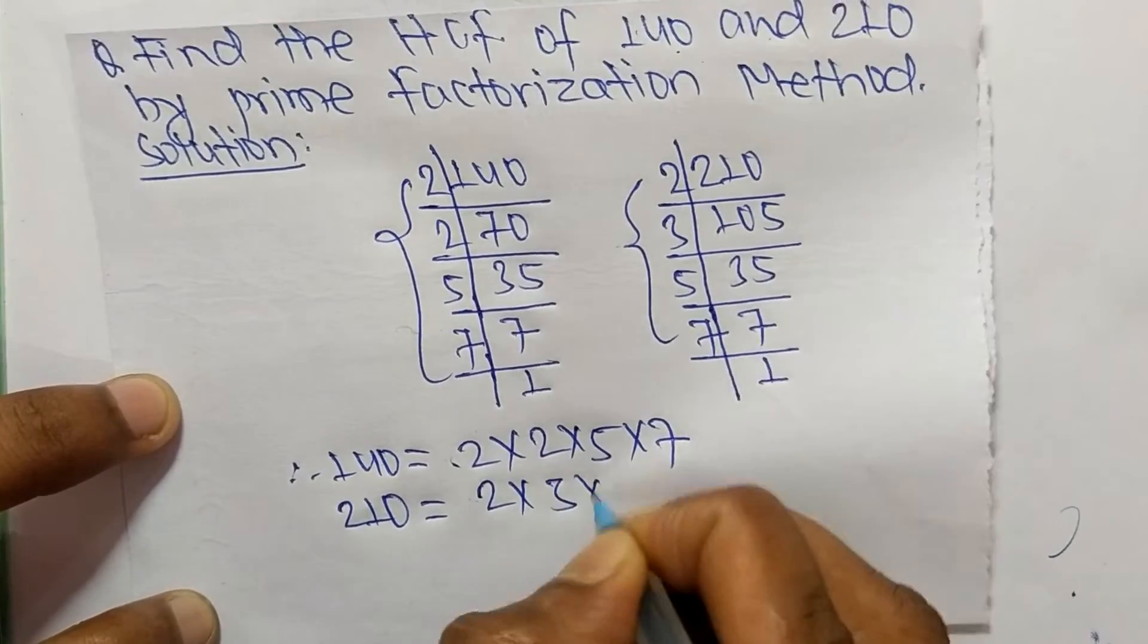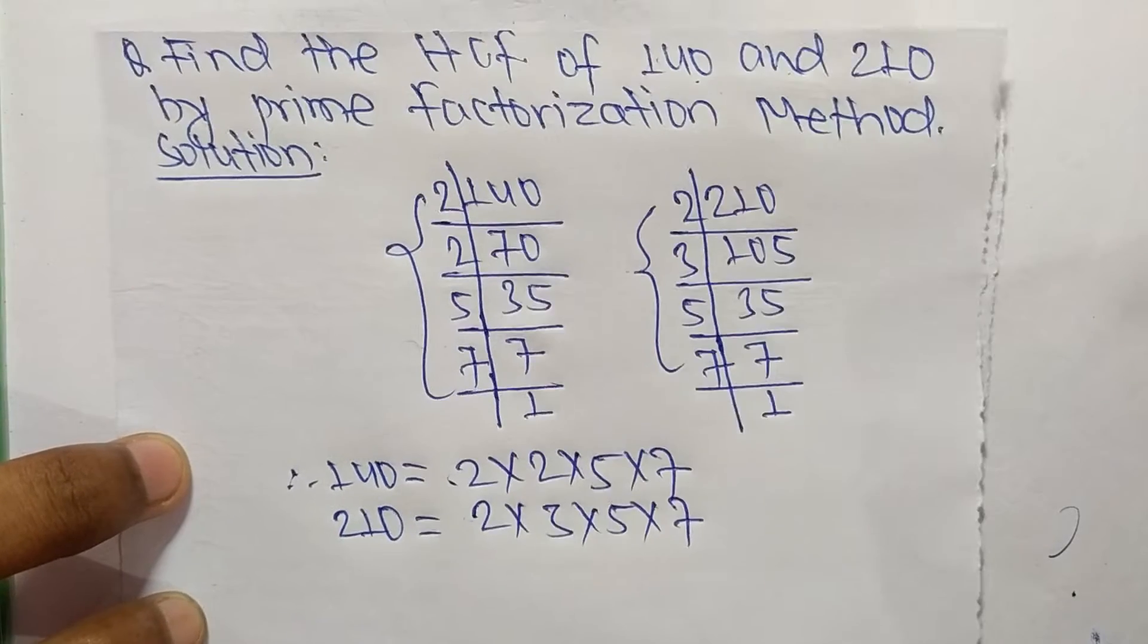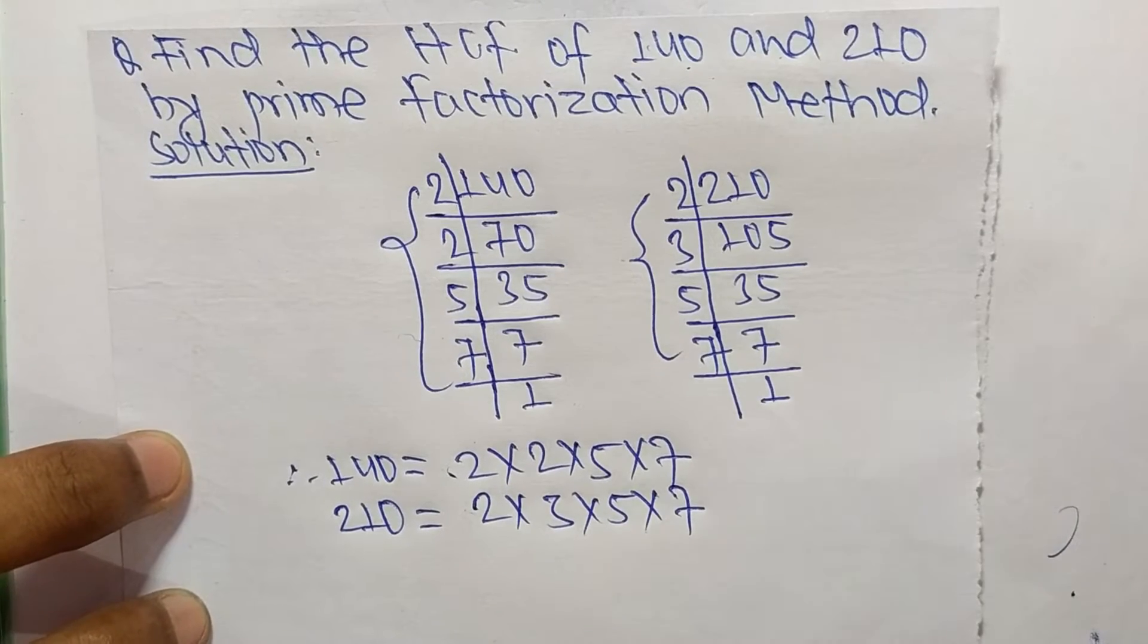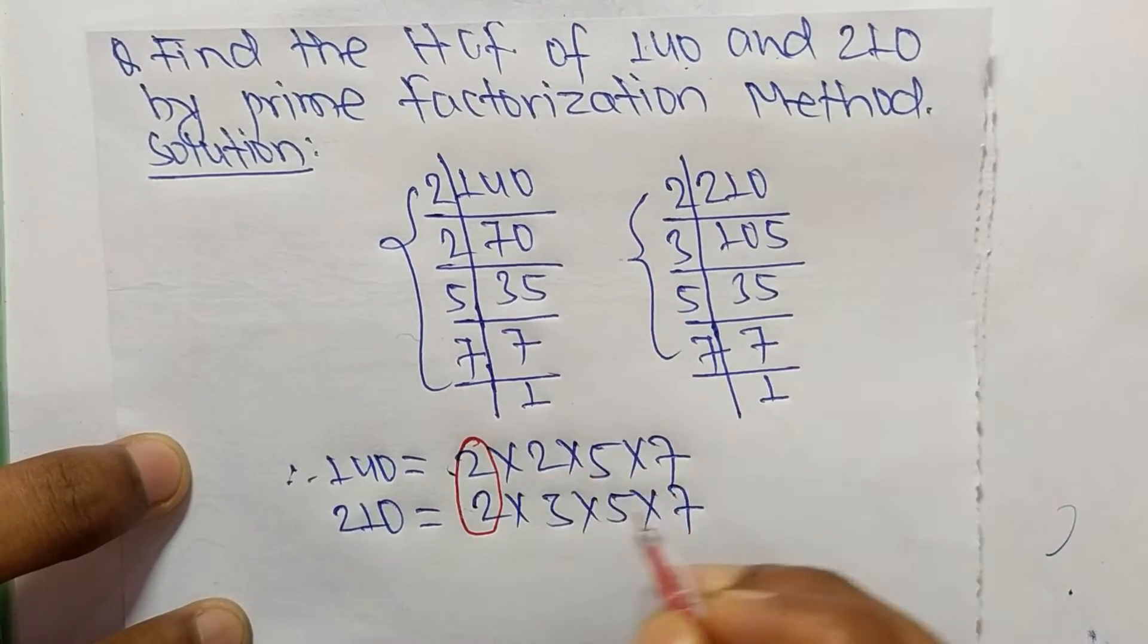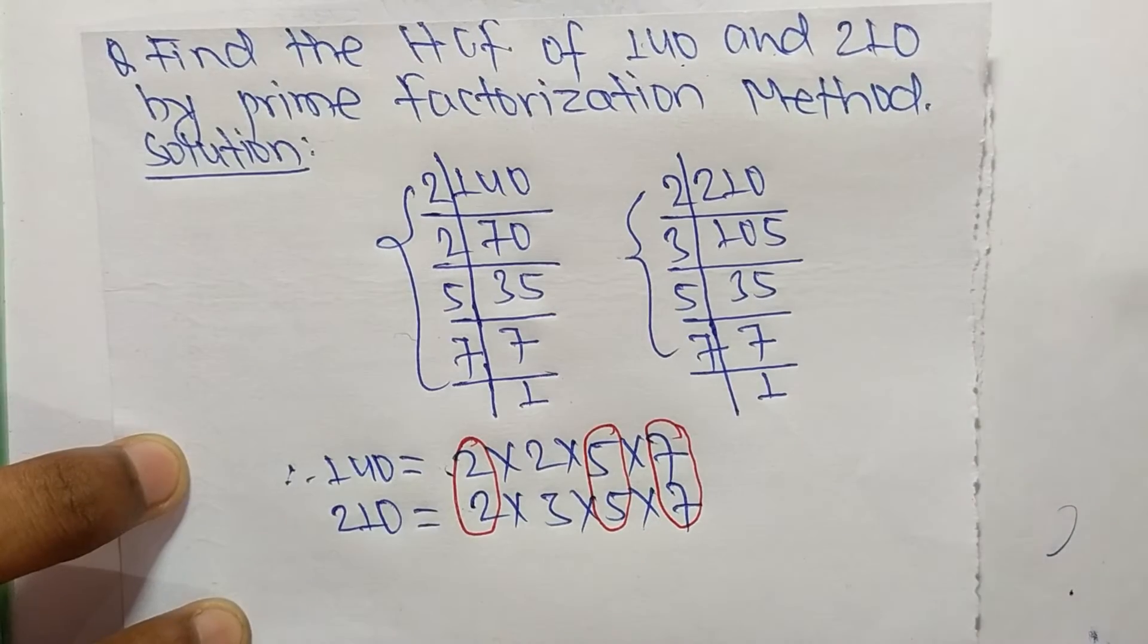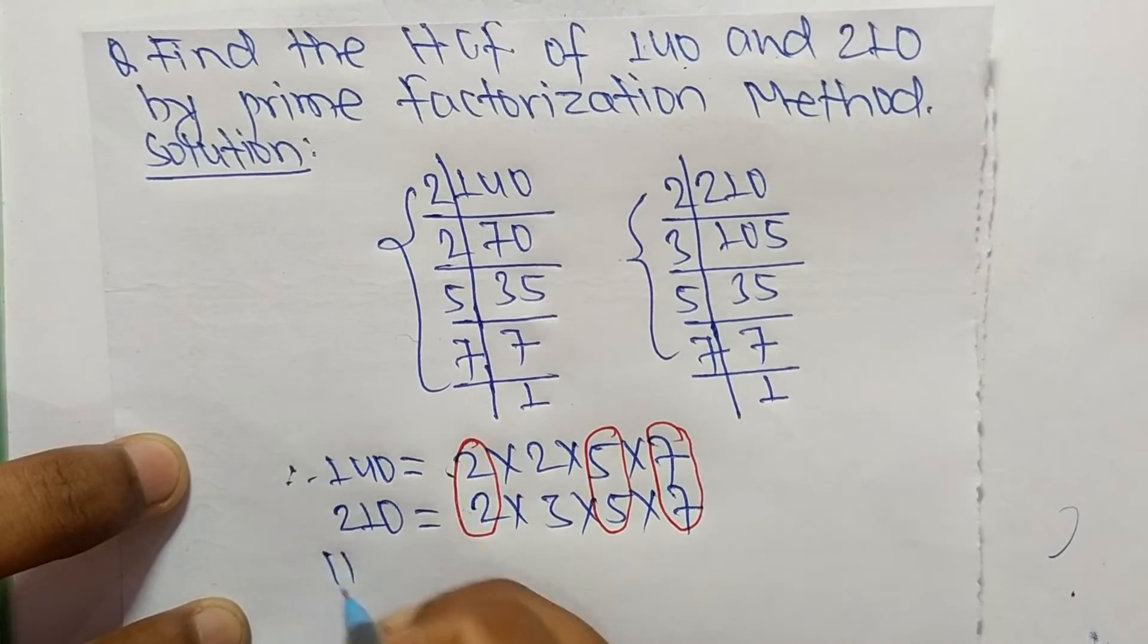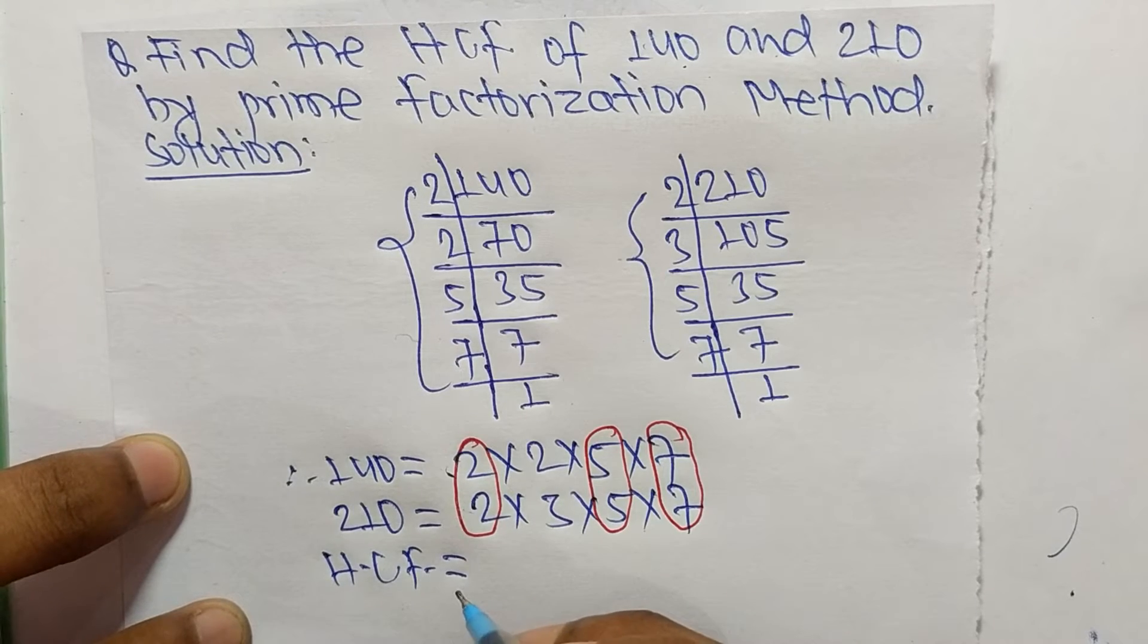Now we select the common factors in these prime factors. The common factors are 2, 5, and 7. The HCF is equal to the product of common factors, which are 2, 5, and 7.